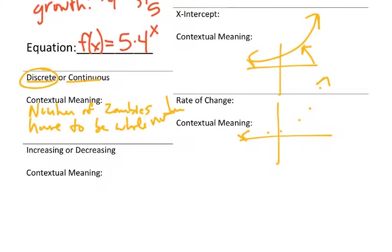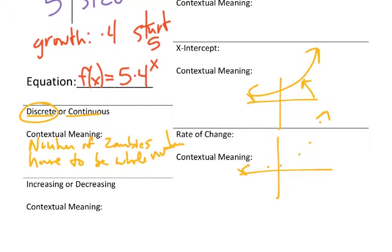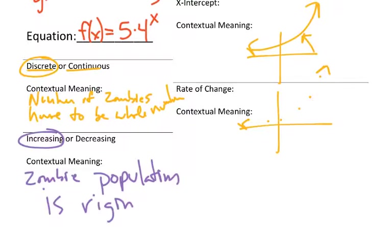Now we can look at the second one, increasing or decreasing. Well, the number of zombies is going up, so it's definitely increasing. What does that mean? According to our story, the zombie population is rising.